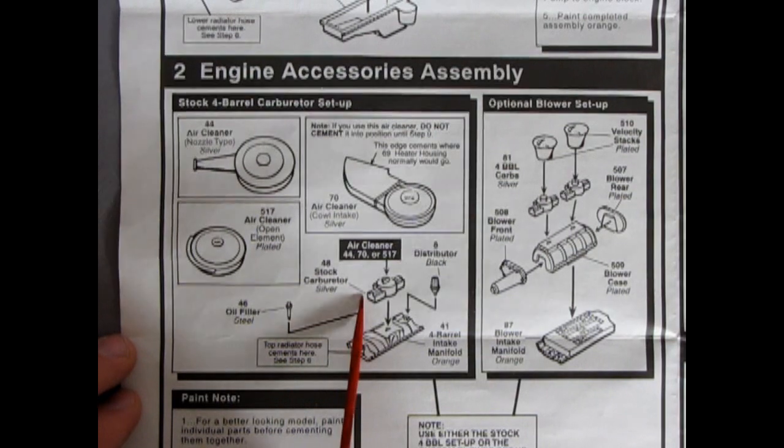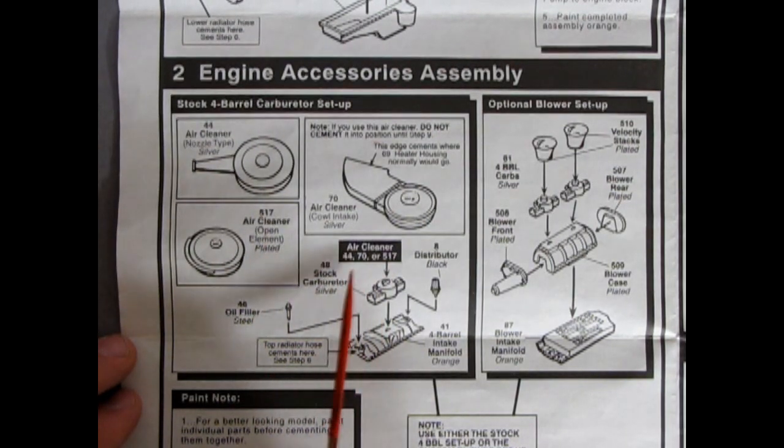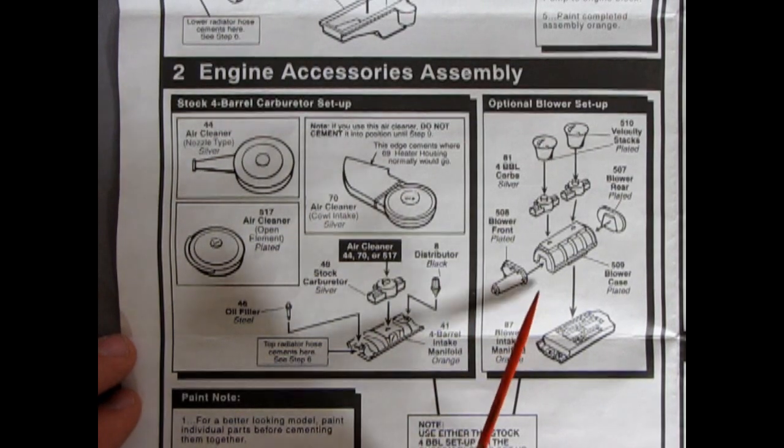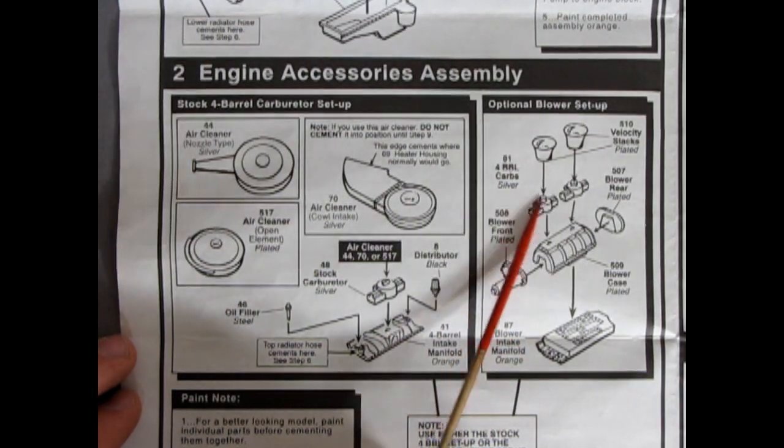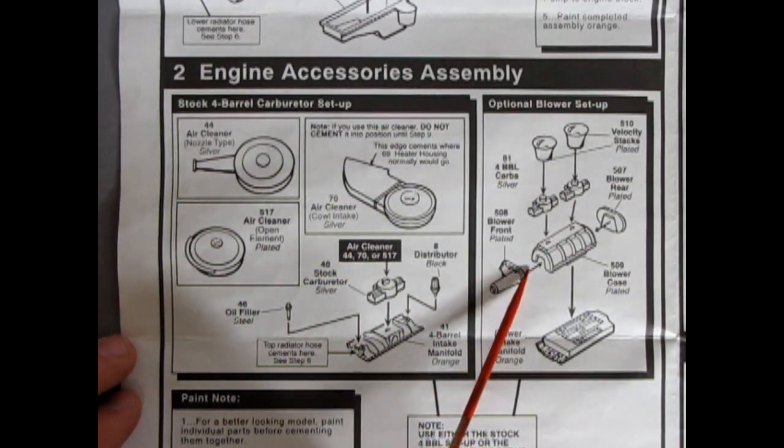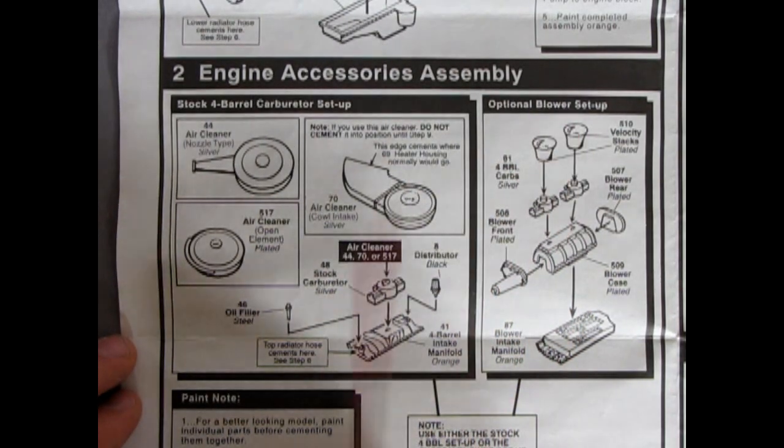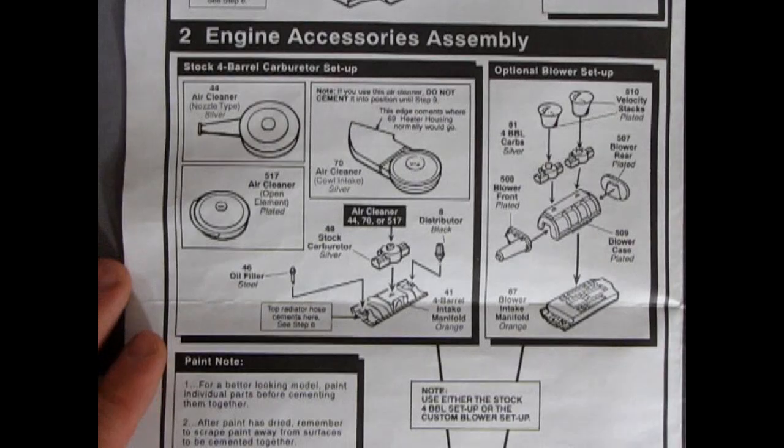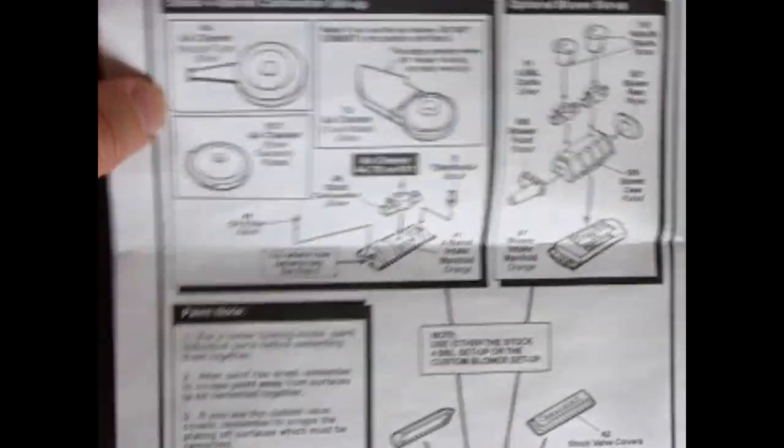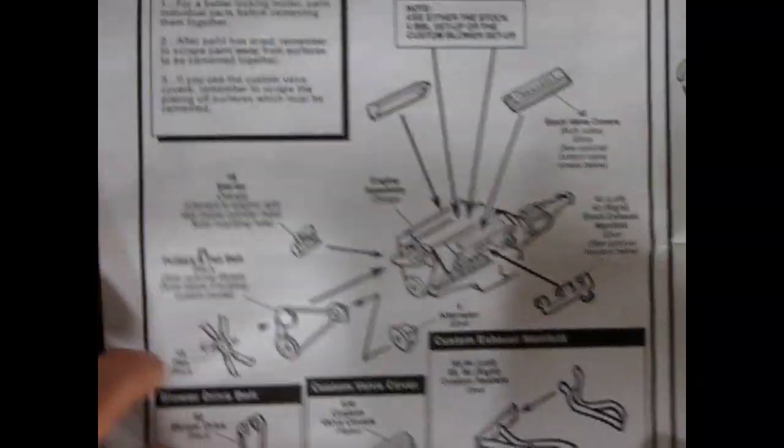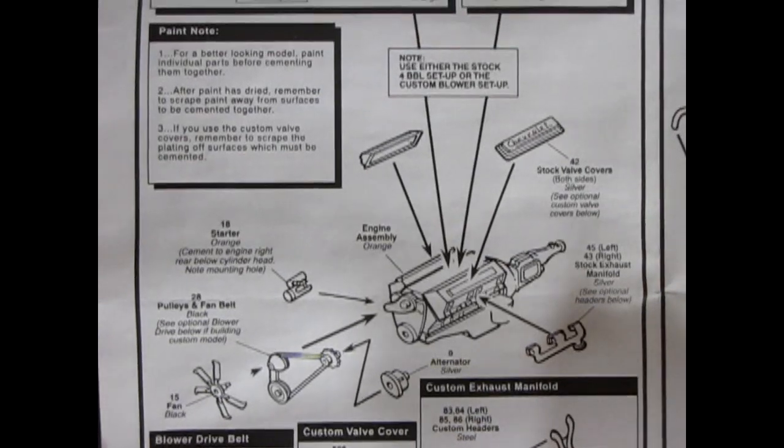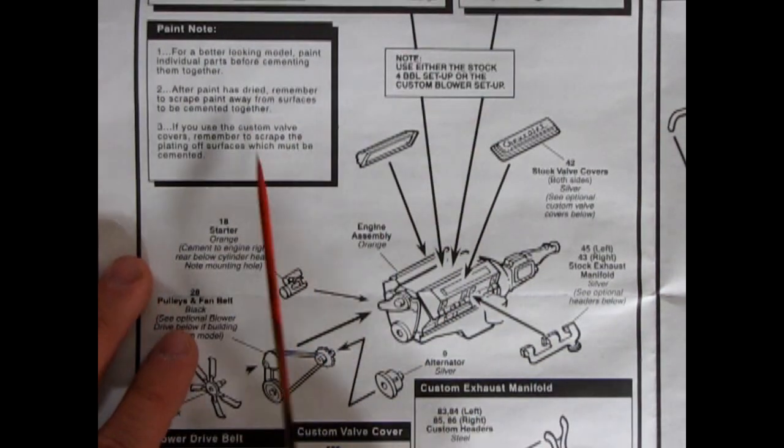This edge cements where the heater housing normally would go. So this is going into the firewall. And then here's our intake manifold for our 302. You've got your oil filler, your carburetor, and it says you could use all those air cleaners on that in your distributor. And then we get into this big four barrel dual carbureted blowered super motor. It says optional blower setup. You're right.